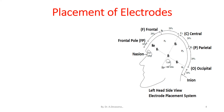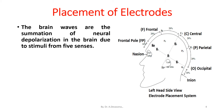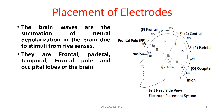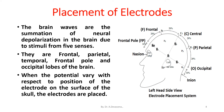The brain waves are the summation of neural depolarization in the brain due to stimuli from the five senses. They are from the frontal, parietal, temporal, frontal port and occipital lobes of the brain. When the potential varies with respect to position of the electrode on the surface of the skull, the electrodes are placed. The figure represents the electrode placement system with appropriate distance.